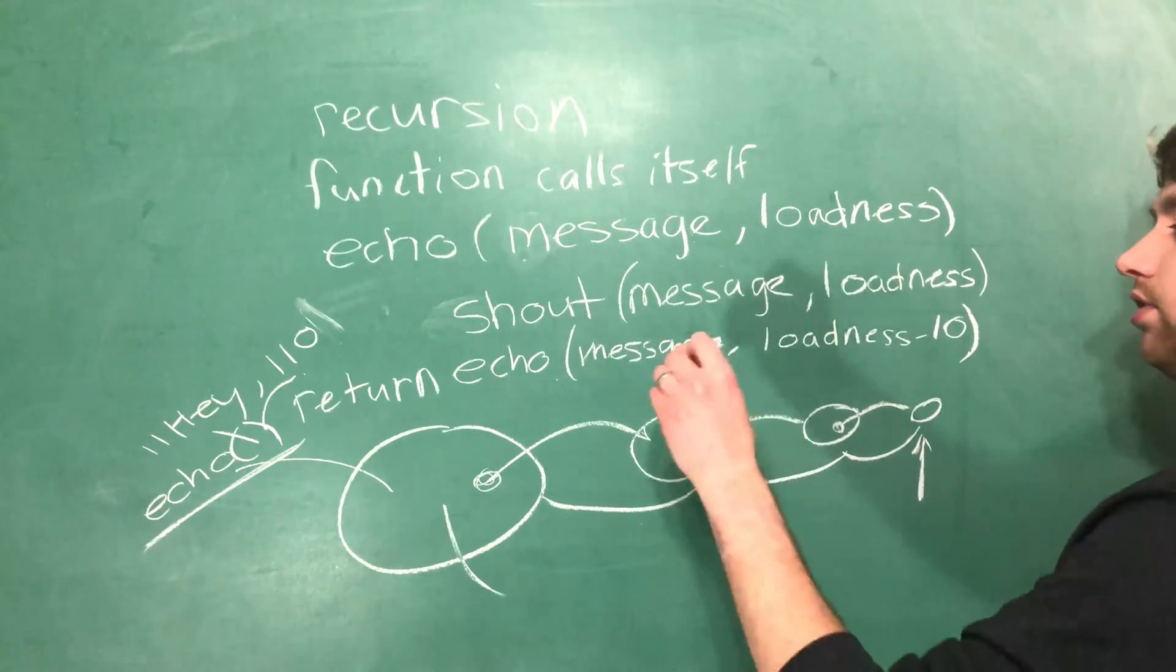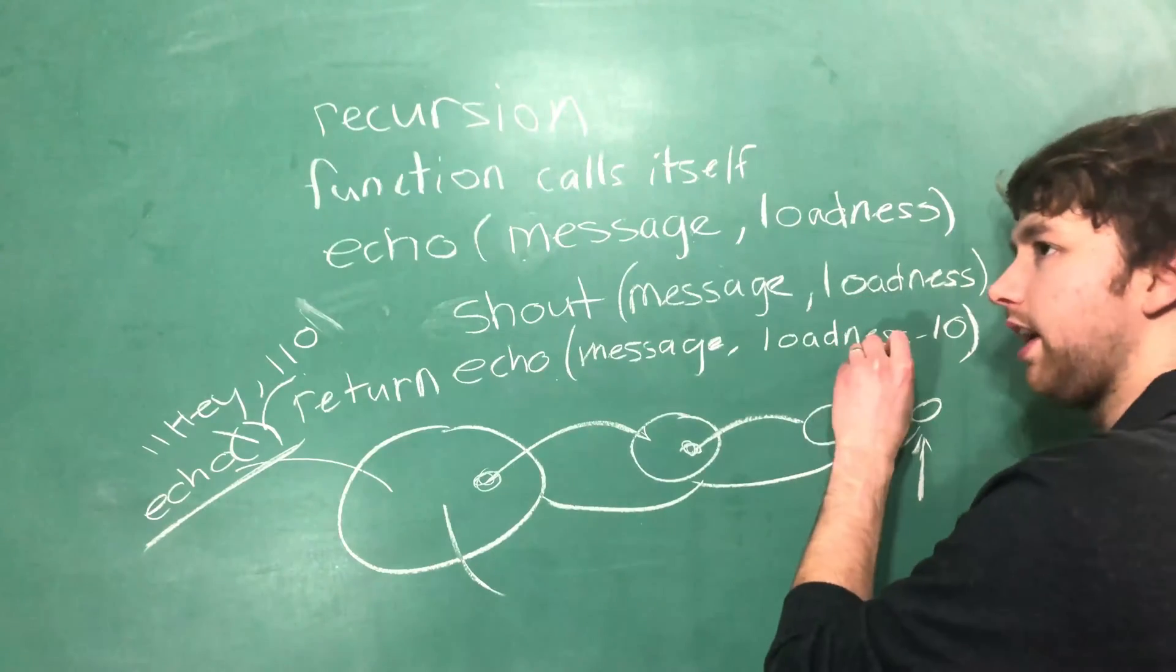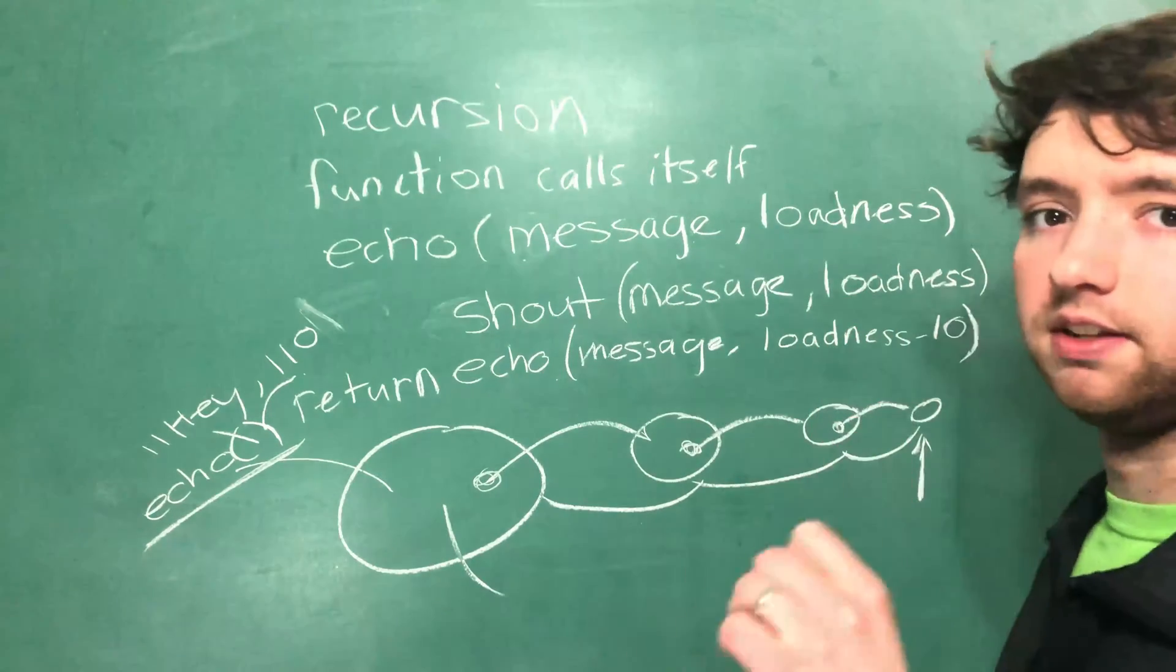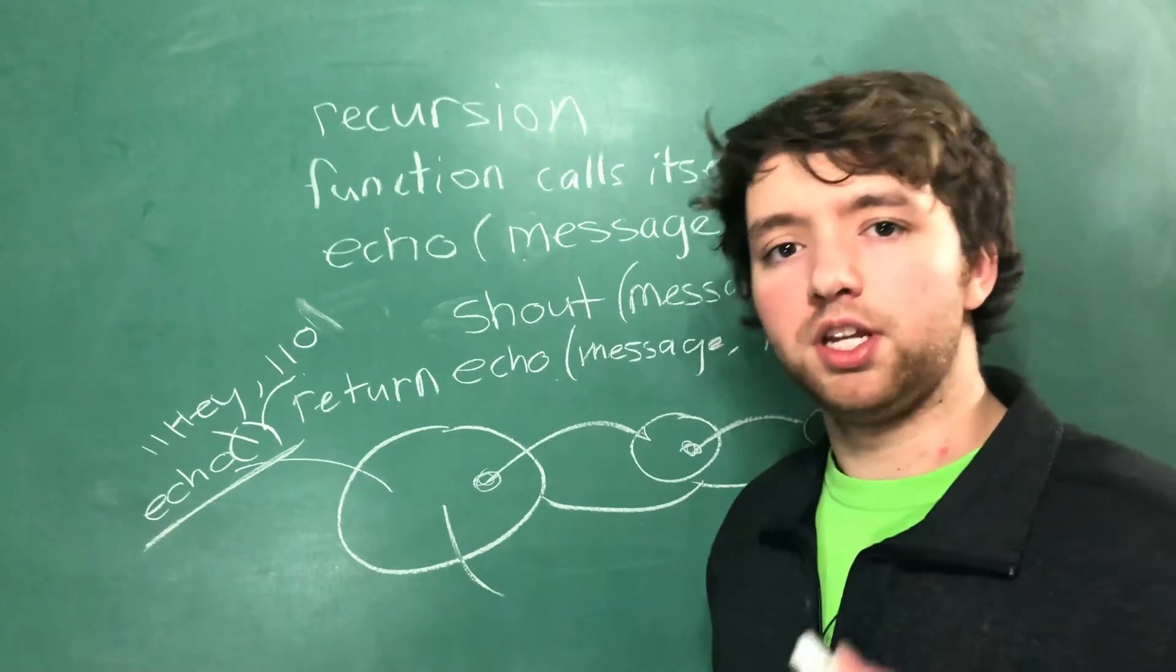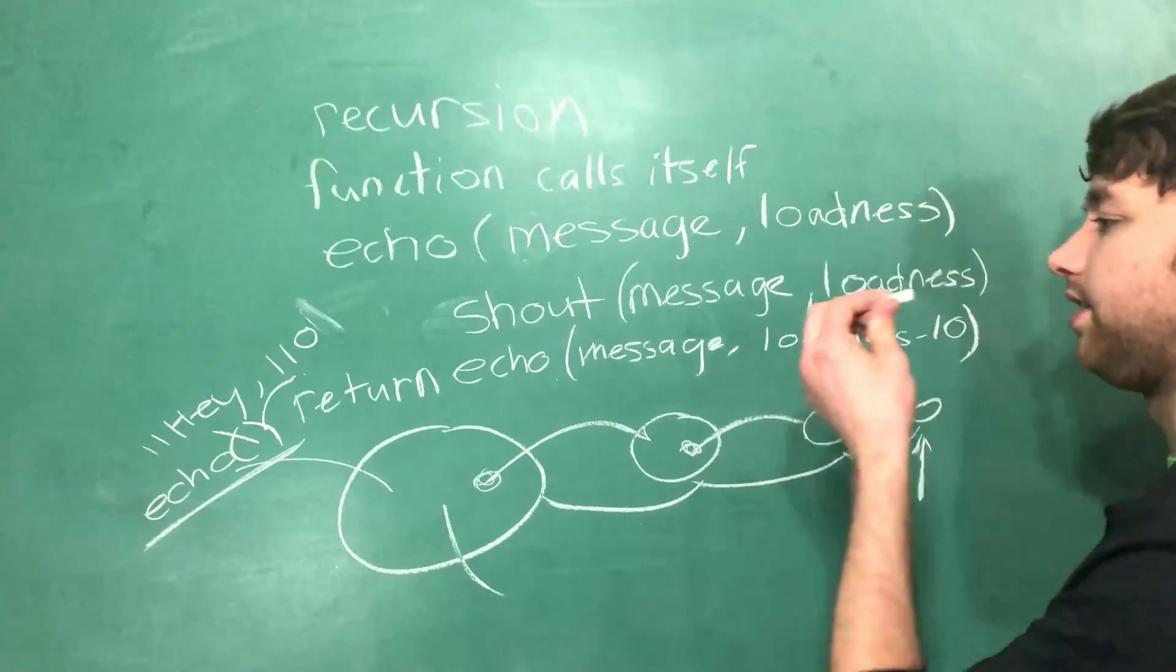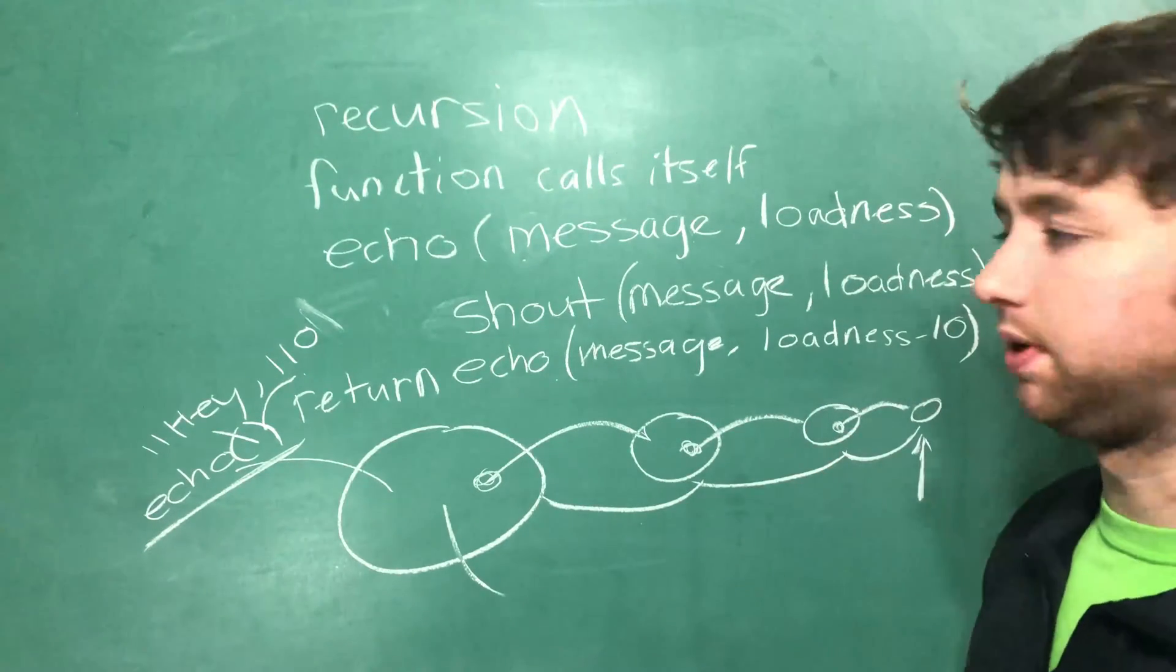Then we're going to call echo with 90 and then echo with 80 and 70, 60, 50, 40, 30, 20, 10, and then zero. Okay, so what happens when we hit zero?